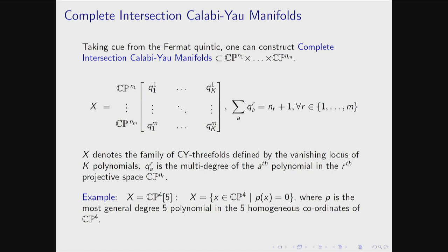Generalizing from the quintic, one arrives at the class of complete intersection Calabi-Yau manifolds, where the ambient space is a product of complex projective spaces. You have a set of K polynomials represented by K columns, and the entries Q_IJ are the multi-degrees of the polynomials in the various projective spaces.